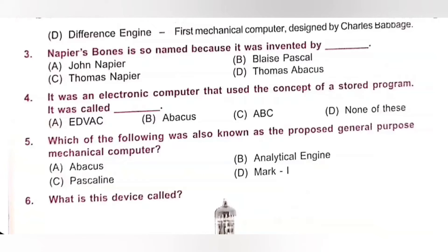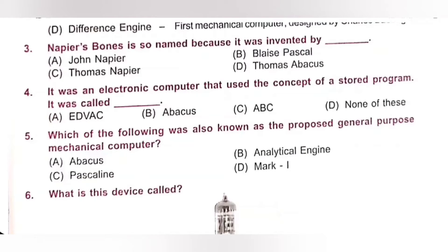Question 5: Which of the following was known as the proposed general purpose mechanical computer? A. Abacus, B. Analytical engine, C. Pascaline, D. Mark 1. The Analytical Engine was designed by English mathematician and computer pioneer Charles Babbage. It was first described in 1837 as the successor to Babbage's Difference Engine — a design for a mechanical computer. Option B is the correct answer. The Analytical Engine was also known as the proposed general purpose mechanical computer.